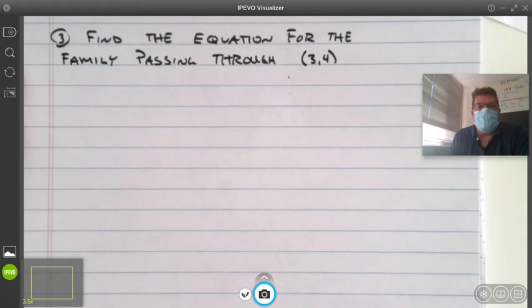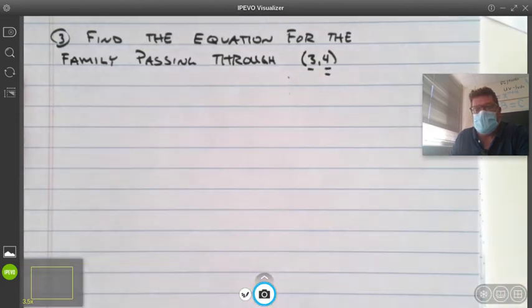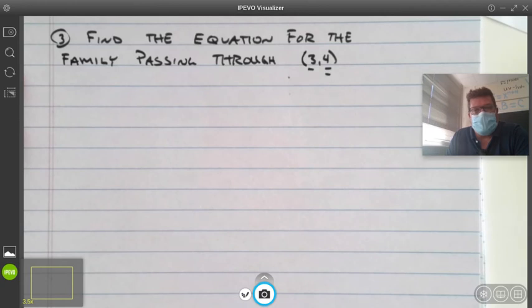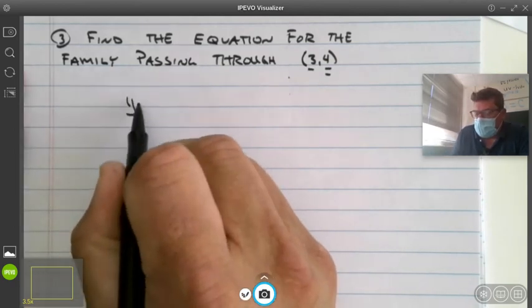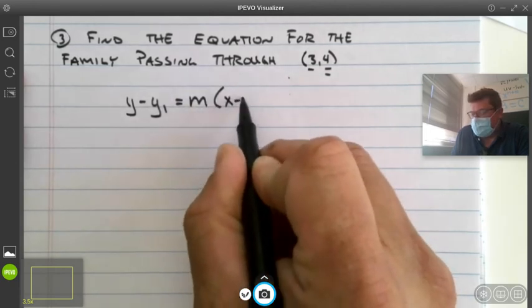Last one. Find the equation for the family passing through. This time, it doesn't give you a y-intercept. So since it doesn't give you a y-intercept, this is going to be a little trickier for some people. Instead of using slope-intercept form, what form do you think would be better suited for this problem? I'm going to use that one too.